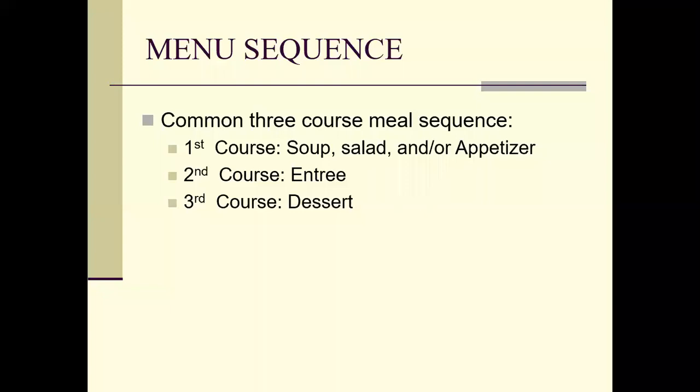It just depends on who you're serving, what you're serving, or what your client or guests want. This is the traditional three-course meal — whether the first course is a soup, salad, or appetizer. They're not all combined; you could combine some of them. For instance, at our bistros we make appetizer salads. Those are the basic three courses you normally have in a menu sequence.